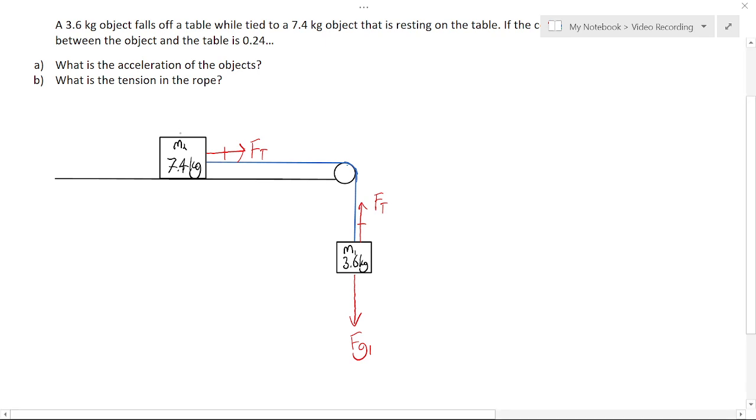Now the mass on the table, well it has a supporting force from the table, which we call a normal force, and it has a gravitational force downwards.